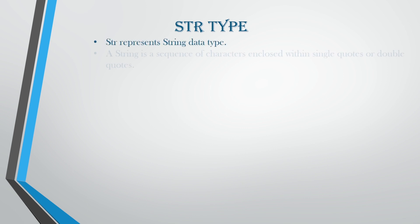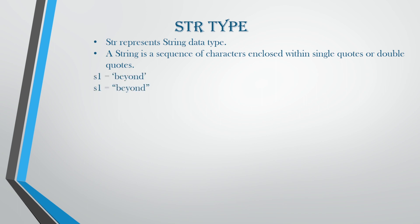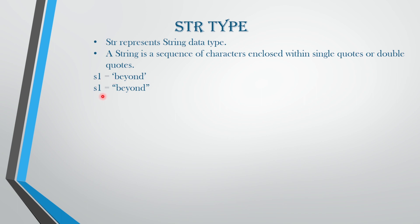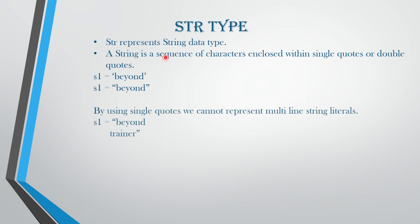The next data type we have is the string type. The str represents the string data type. A string is a sequence of characters enclosed within a single quote or a double quote. For example, you can write 'beyond' in single quotes or "beyond" in double quotes — either representation works.